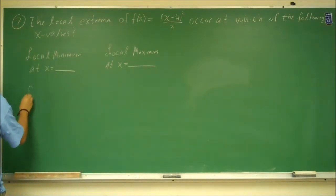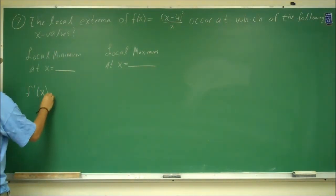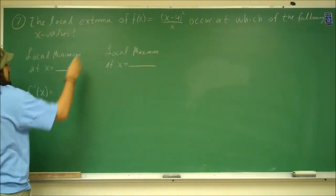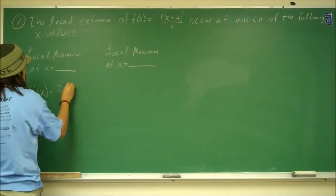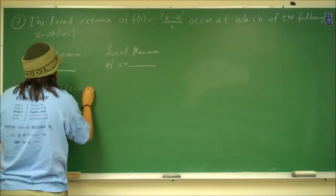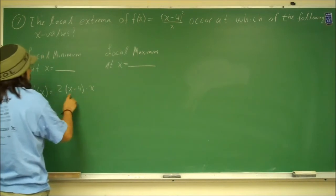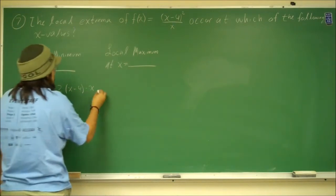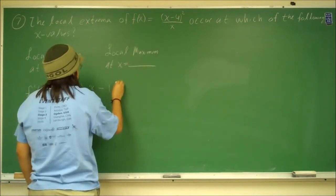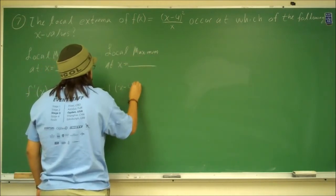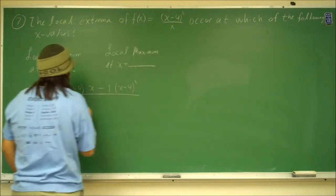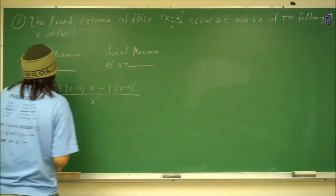So f prime — our function is (x - 4)² / x and we're taking the derivative of this. I'll use the quotient rule. Take the derivative of the top: that's 2(x - 4) times just the bottom. The derivative of x minus 4 is 1, so I'm not writing that. Then minus, take the derivative of the bottom — that's 1 — times just the top. Divide that by the bottom function squared.